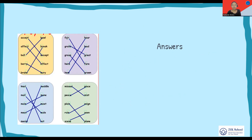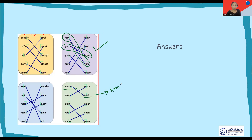Here are some more examples. 'Fair' and 'fare' sound the same — they're homophones. 'Great' and 'grate' are homophones. 'Grown' and 'groan' are homophones. 'Here' and 'hear,' 'heal' and 'heel' — these are all homophones. Let's also look at 'missed' and 'mist' — these are homophones too.